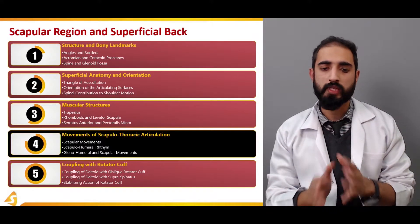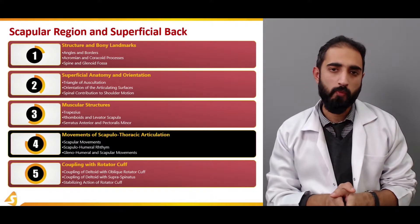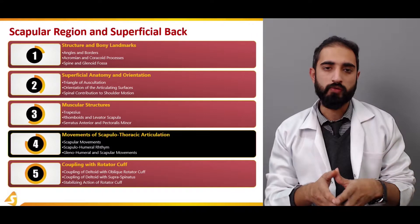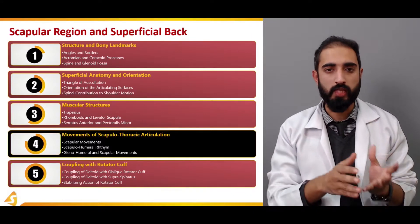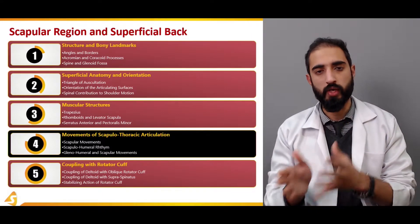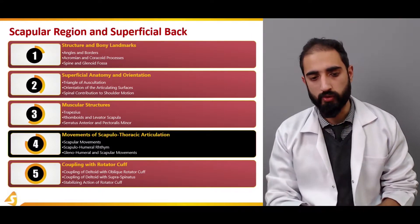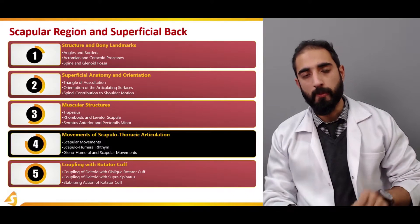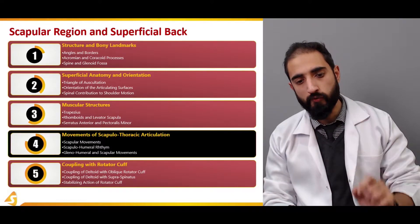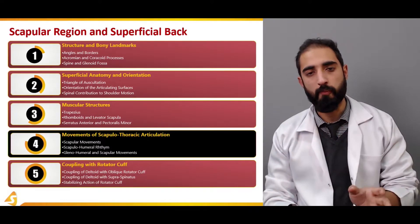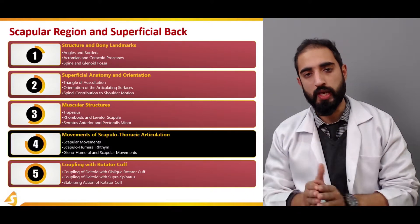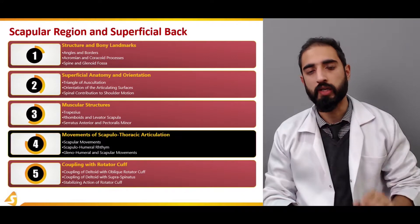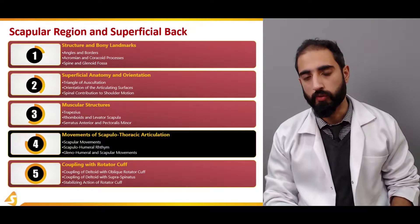We are also going to talk about the scapulohumeral rhythm, which is the association of movement between the scapulothoracic articulation and the glenohumeral joint. We will also discuss the movements of the scapula which are associated with the movements that occur at the glenohumeral joint.